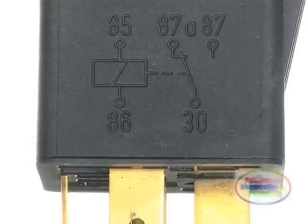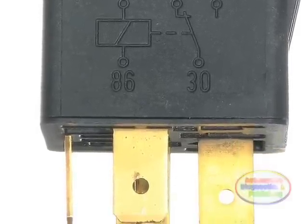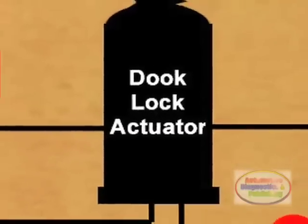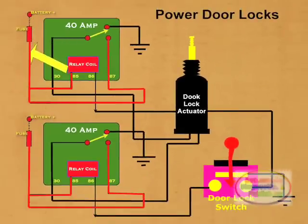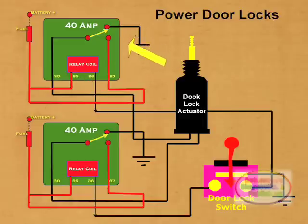Here is where a relay becomes a very versatile controller of sorts. Here's how the circuit works. Power is fed from the fuse to terminal 85 of the relay coil. This right away tells us that the relay actuation is going to be by ground, which is a lot safer.